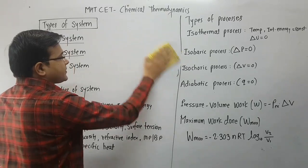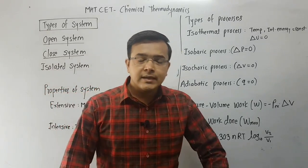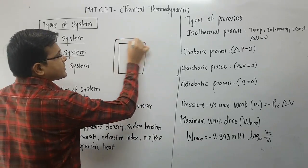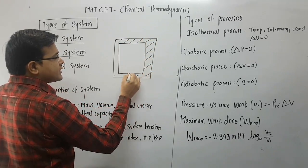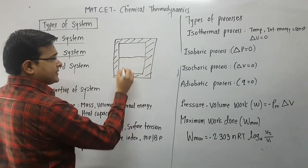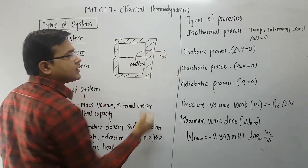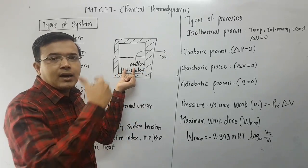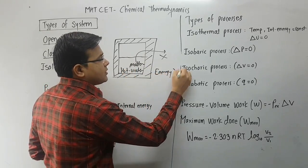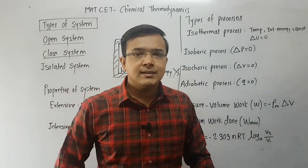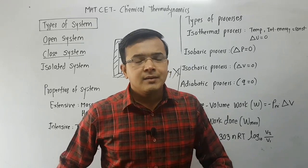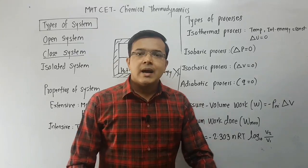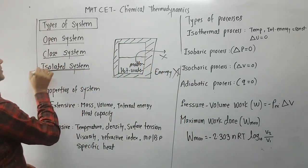Now the third is isolated system. A simple example: take a thermos flask. This is an isolated system. The matter cannot go outside, and if the system contains hot water, the energy also cannot go outside. There is no exchange of matter as well as energy from system to surrounding or surrounding to system. Such a system is said to be an isolated system.